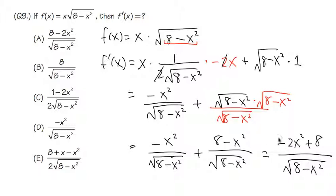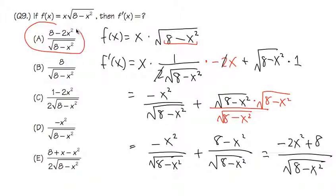Looking at the answer choices, this matches answer choice A. Even though it may be written differently, 8 minus 2x squared is the same as negative 2x squared plus 8. So the answer is A.